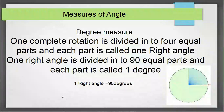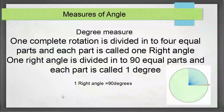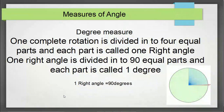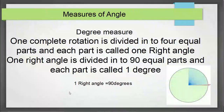Now let us study the different units of measure of angle. Just as length can be measured in different units — meter, centimeter, millimeters, feet, inches, etc. — similarly, an angle can also be measured in different units. One such unit is the degree measure, which you generally used in previous classes.